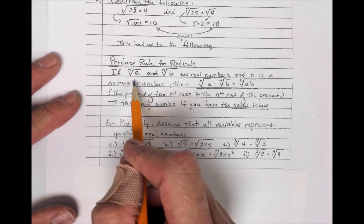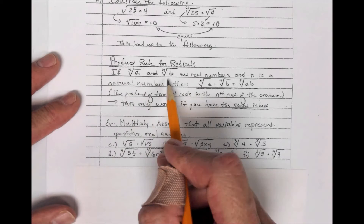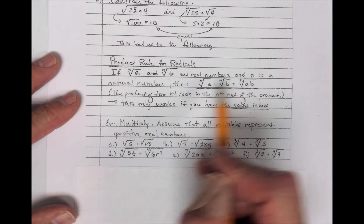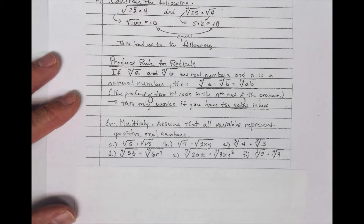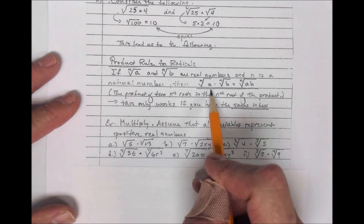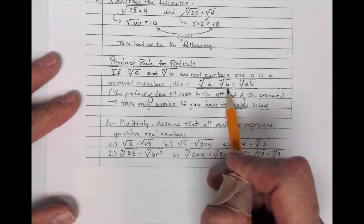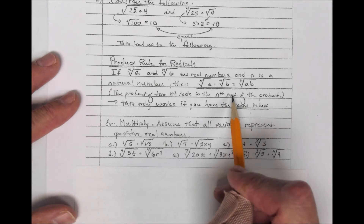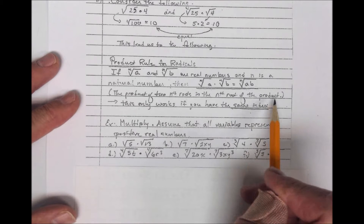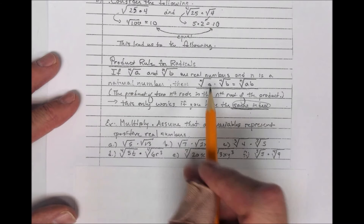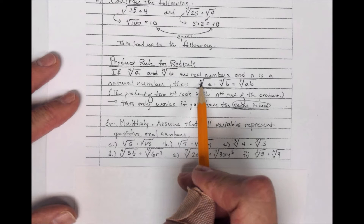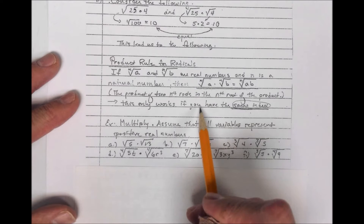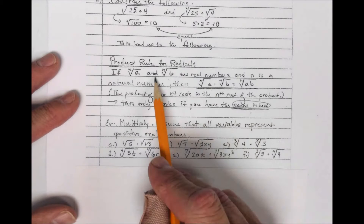The product rule for radicals says that if you have the nth root of a and the nth root of b, and these are real numbers, and n is a natural number, then the nth root of a times the nth root of b equals the nth root of a times b — the product of the two nth roots is the nth root of the product. It only works if they have the same index. The index is the number in the little crook of the radical sign. If they don't match, you can't use this property.